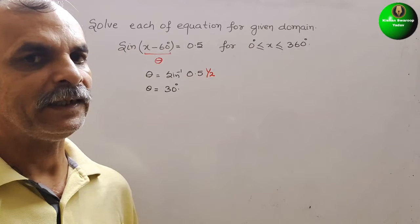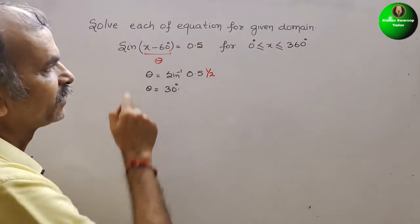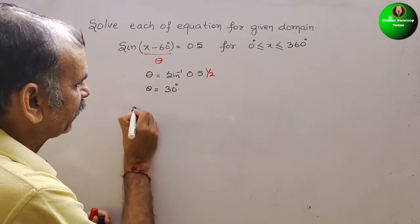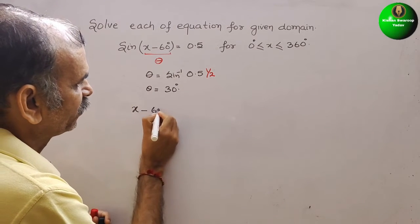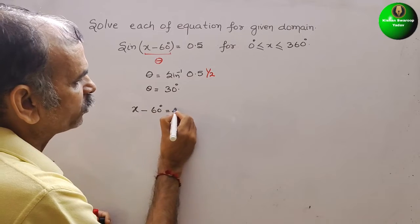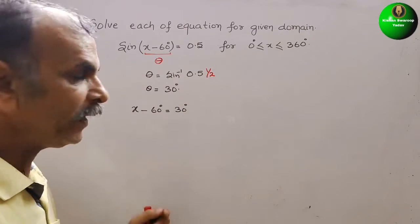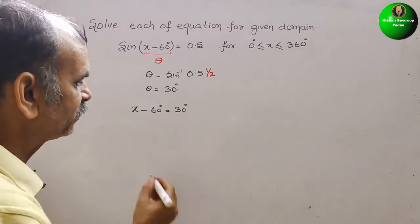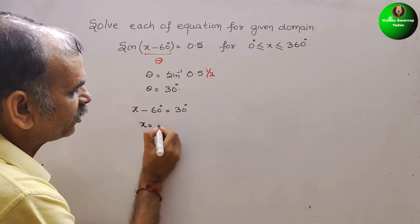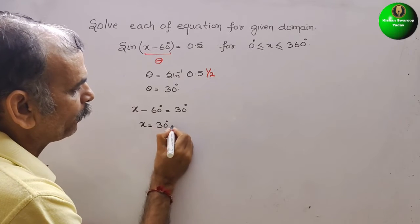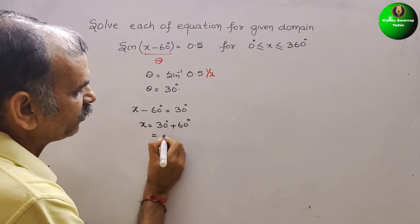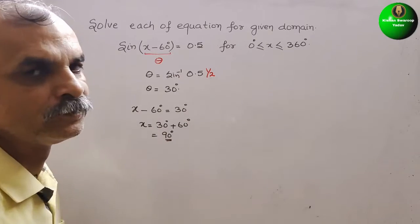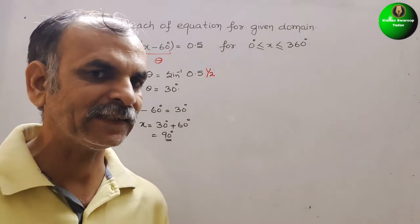But theta is what? x minus 60. So now we can write it as x minus 60, that is equal to 30 degrees. Bring this 60 to right side. What is your x? Now we can say x is equal to 30 degrees plus 60 degrees, that is equal to 90 degrees. x is 90.